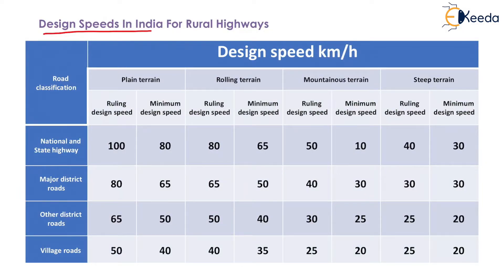Design speeds in India for rural highways can be determined from this table. Here, design speed in kilometers per hour is given for plain terrain, rolling terrain, mountainous terrain, and steep terrain. In the first column, road classification is written.